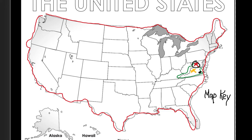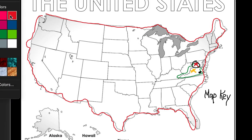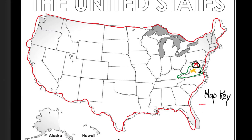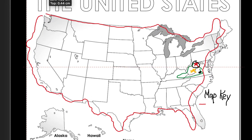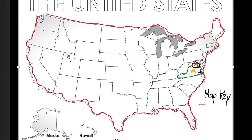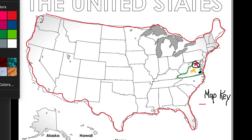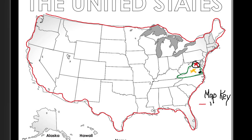So let's get our colors out. What color was the outline of the United States? Yes, that was that red color. So map key — we're going to say outline of the United States. We're just going to say US because Miss Sparks doesn't have room exactly right now. So the US, United States. What color was our outline of Virginia?